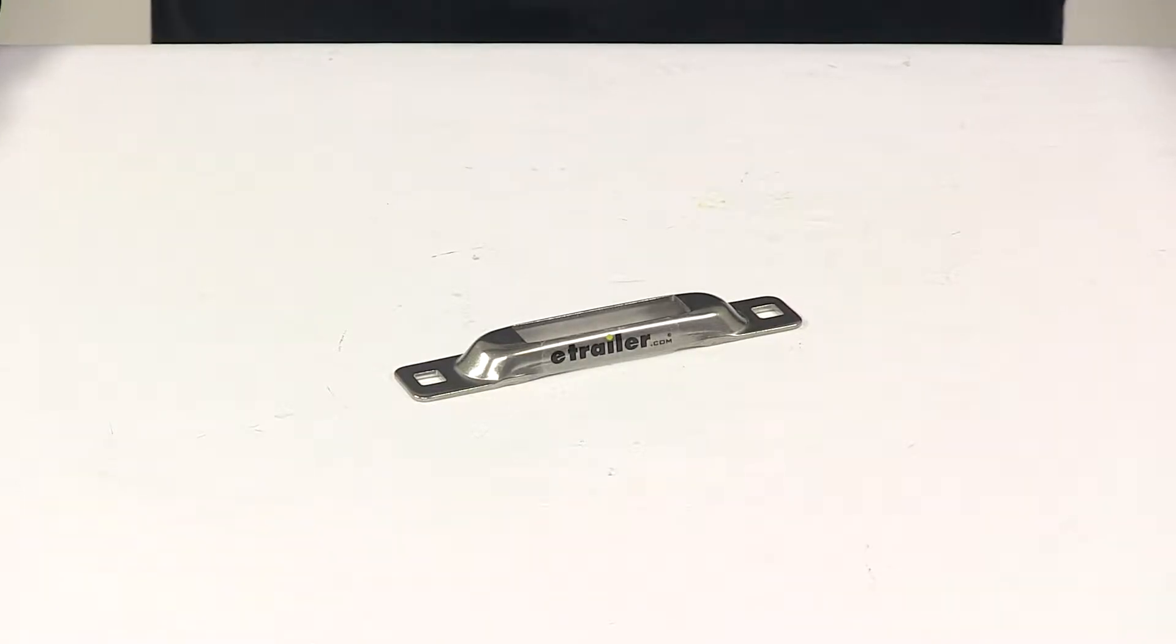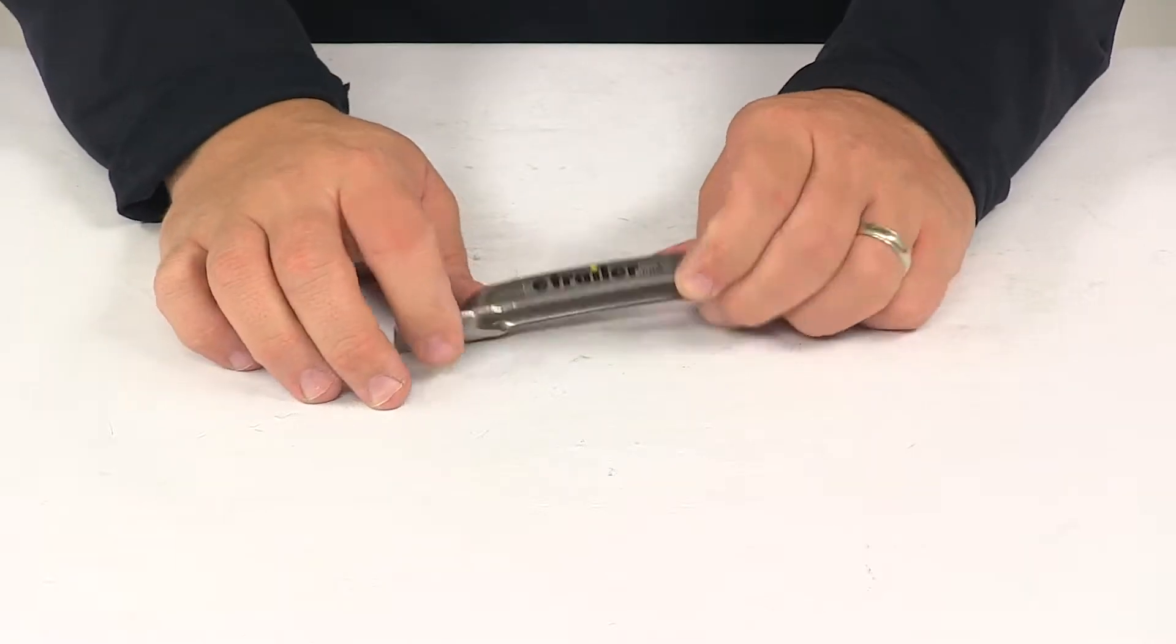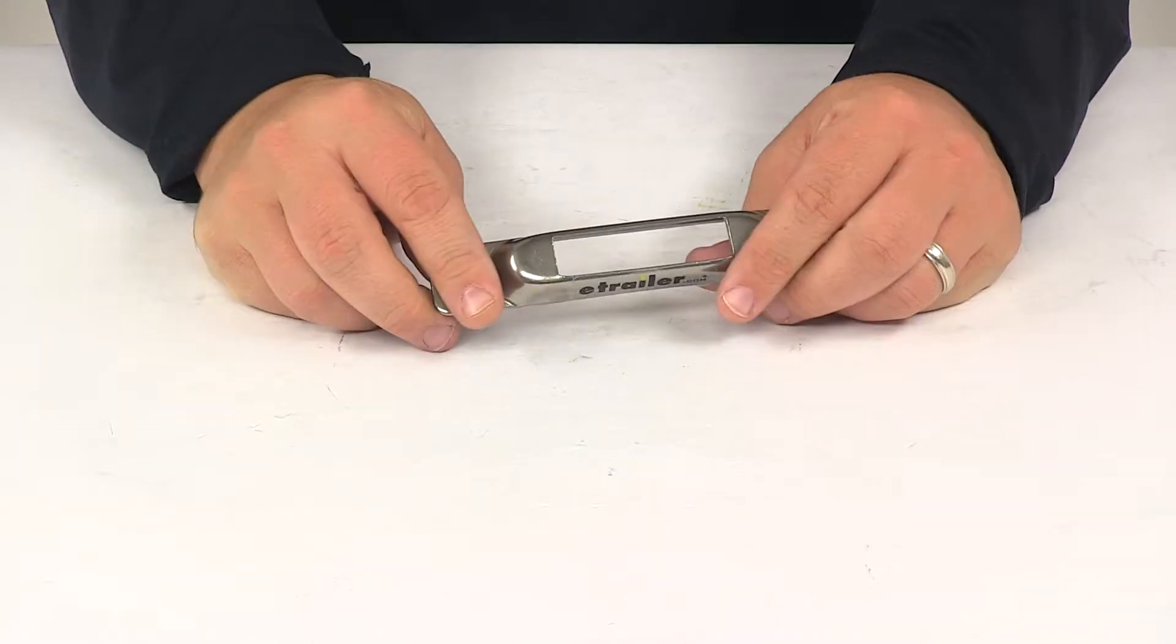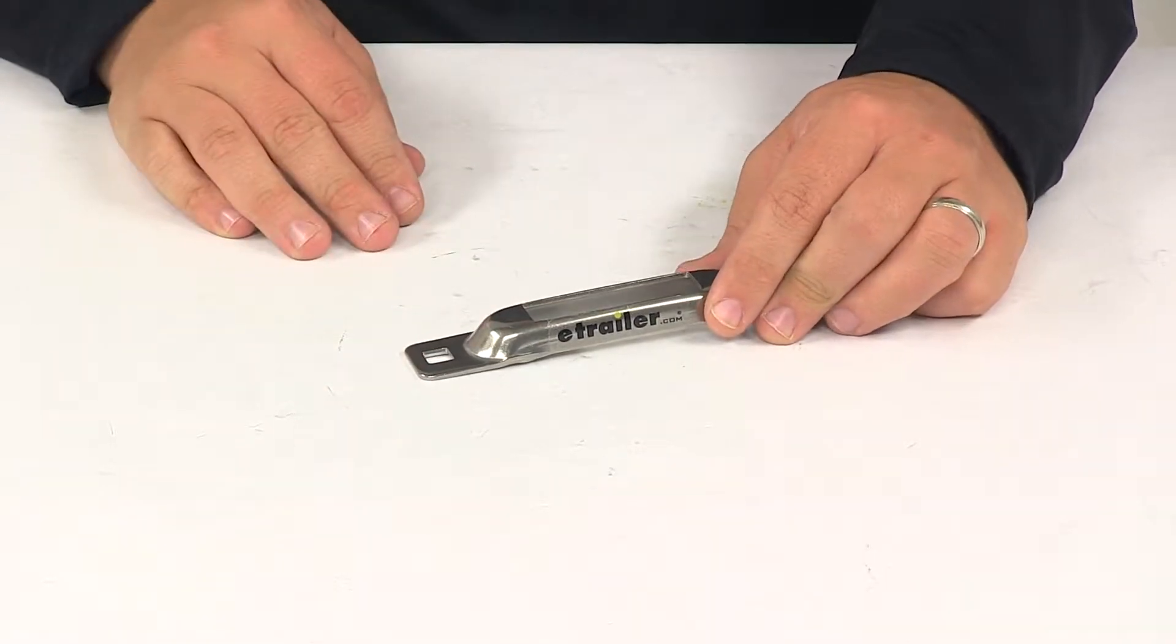Today we're taking a look at a Snap-Lock E-Track Tie-Down Anchor. This is a single E-Track anchor that lets you add a tie-down point anywhere on your trailer or truck bed.